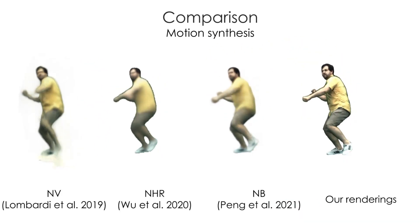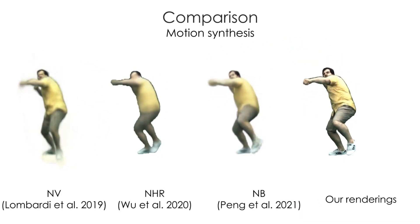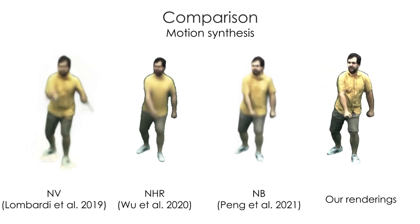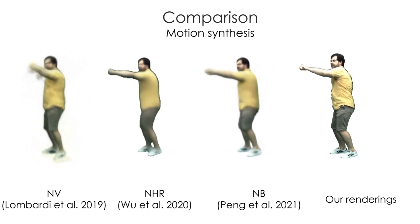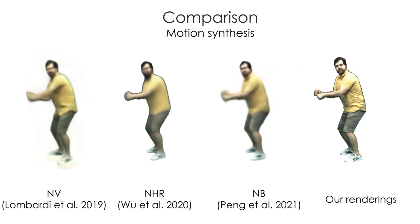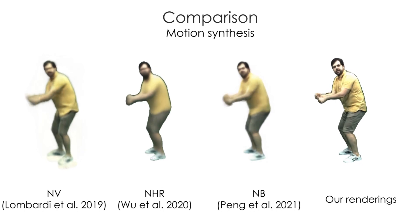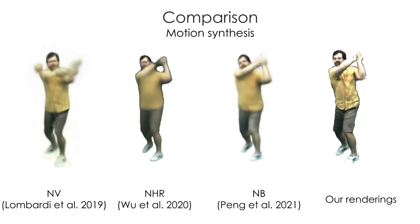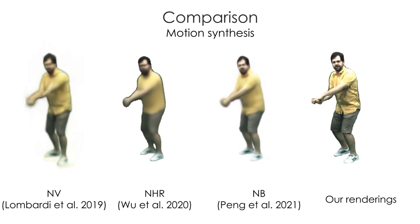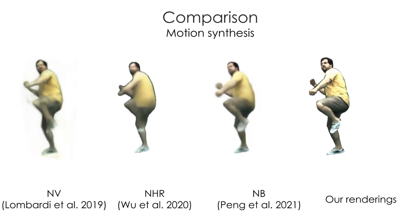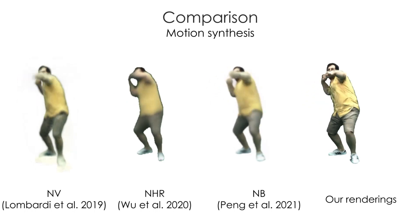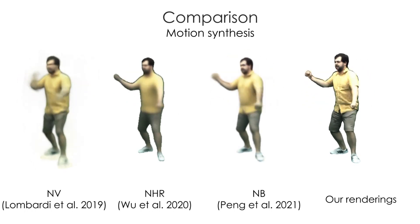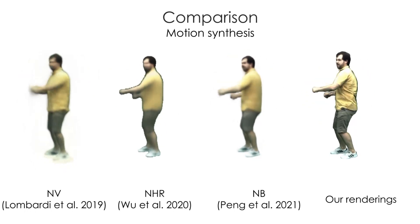Here we compare to previous works: Neural Volumes, Neural Human Rendering, and Neural Body, which also target neural synthesis. We found that their results are very blurry and contain a lot of visual artifacts when training on such long sequences as presented in the Dynacap dataset.